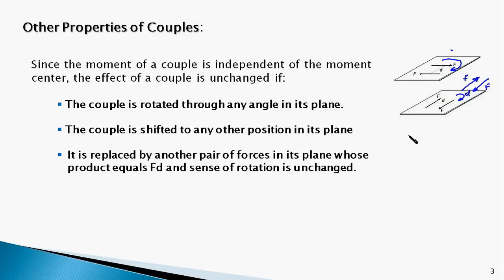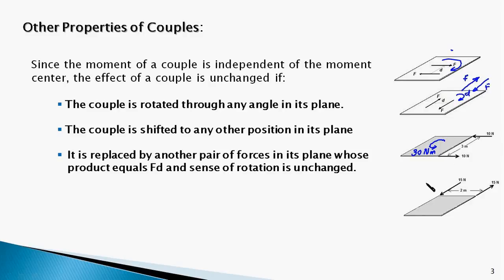The effect of a couple is also unchanged if it is replaced by another pair of forces in its plane whose moment is FD and sense of rotation is the same as the original. For example, two forces of 10 Newton magnitude with a distance of 3 meters form a counterclockwise couple of 30 Newton-meters. If shifted to another edge with forces of 15 Newtons over 2 meters, the moment is still 30 Newton-meters counterclockwise, so the two couples are identical and the effect remains unchanged.